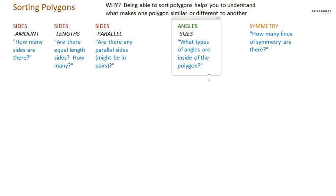Angles. What types of angles are inside of the polygon? So, inside of the polygon there might be acute angles, or obtuse angles, or right angles, or maybe a combination. Symmetry. How many lines of symmetry are there?